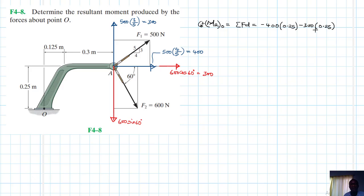And then this other one will be a plus, this one is clockwise. So plus 300 times 0.3 plus 0.125. And then this other one here will be clockwise, so this one is equal to 600. And then this other one here will be downward, sine 60, times 0.3 plus 0.125.